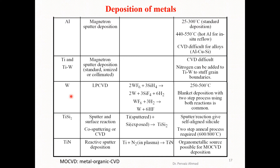For tungsten thin film deposition, LPCVD is applied. The reactions occur at a temperature range of 250 to 500 degrees centigrade, using a two-step blanket deposition process with both reactants.